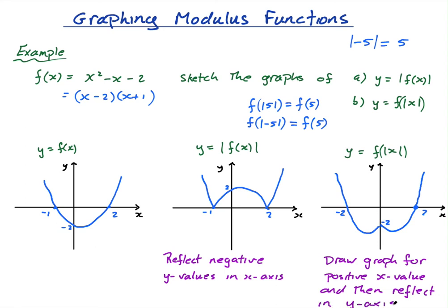So to summarise: for mod f of x, take the negative y-values and reflect them in the x-axis. For f of mod x, draw the graph for positive x-values first — anything to the right of the y-axis — because they behave normally, then reflect that in the y-axis. In the next lesson, we'll use these graphs to solve equations with modulus functions.